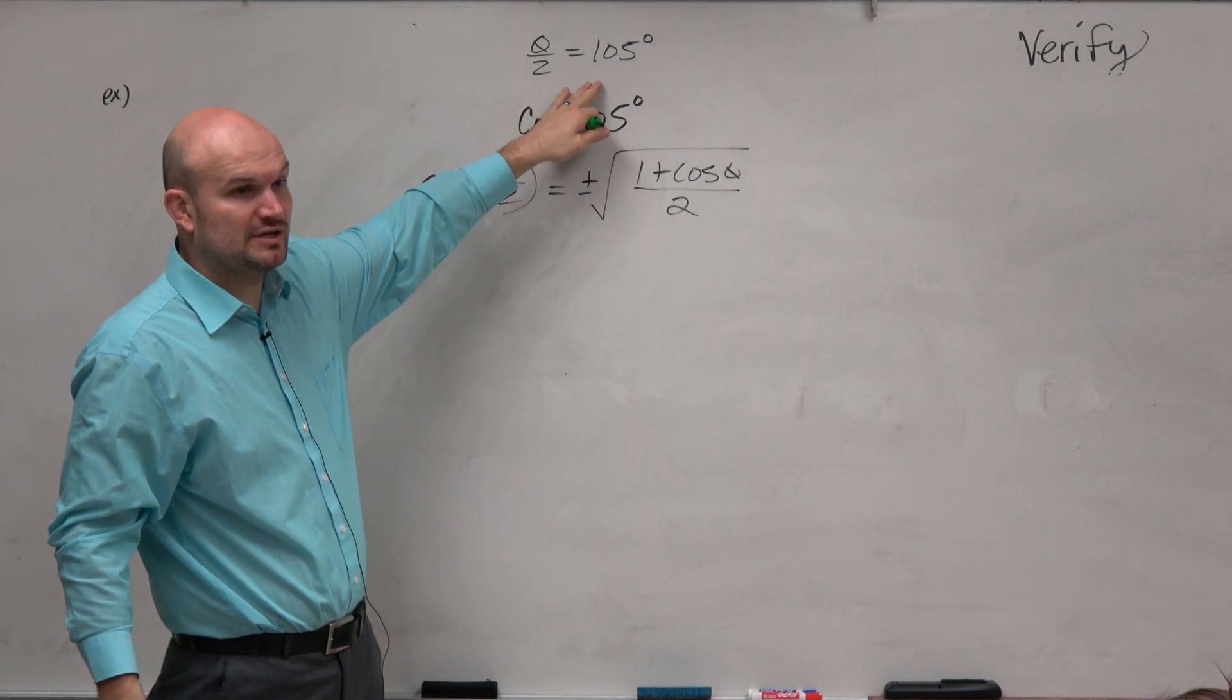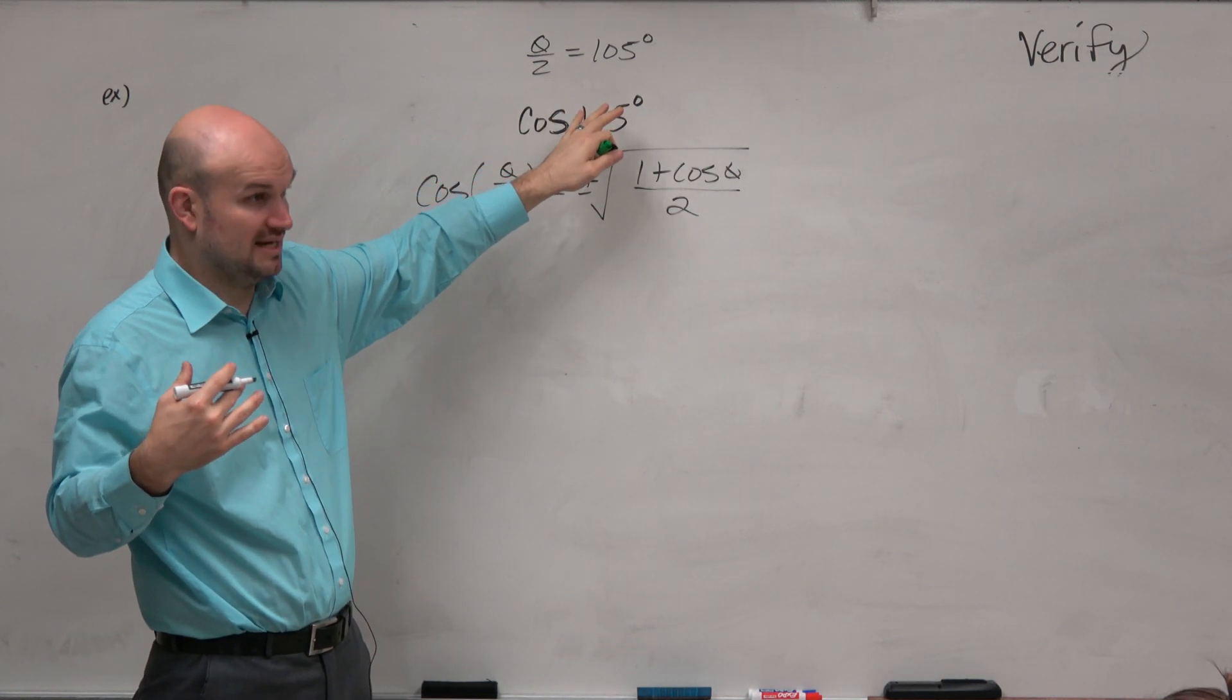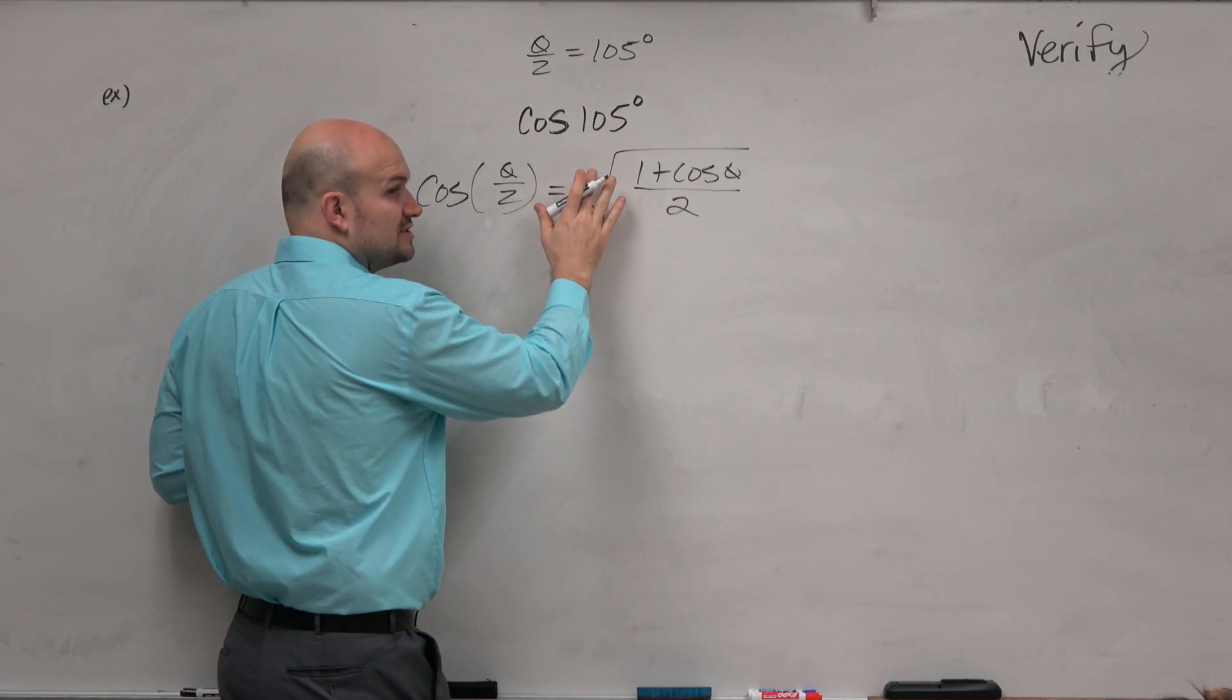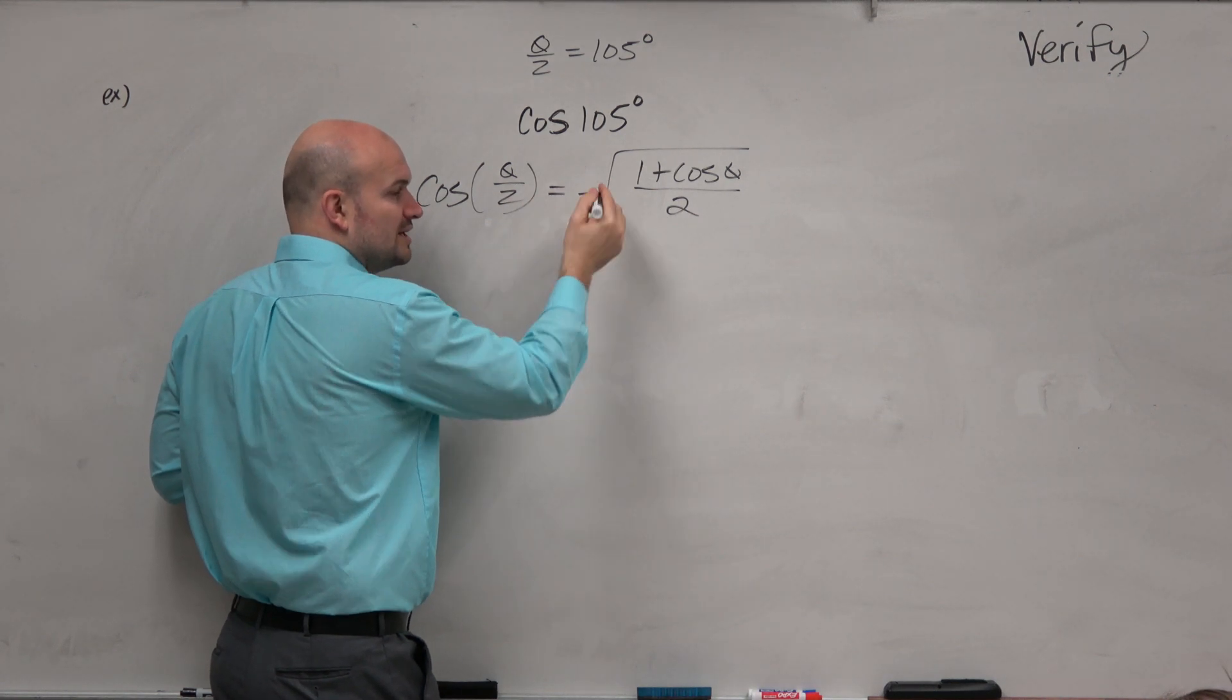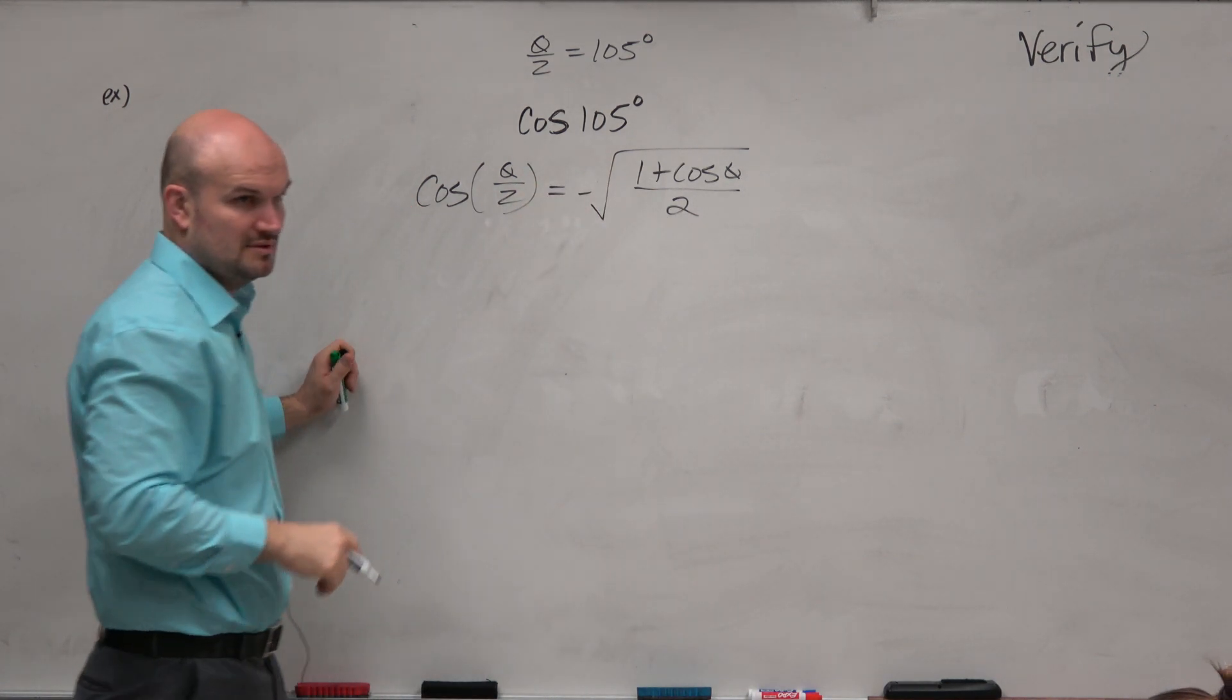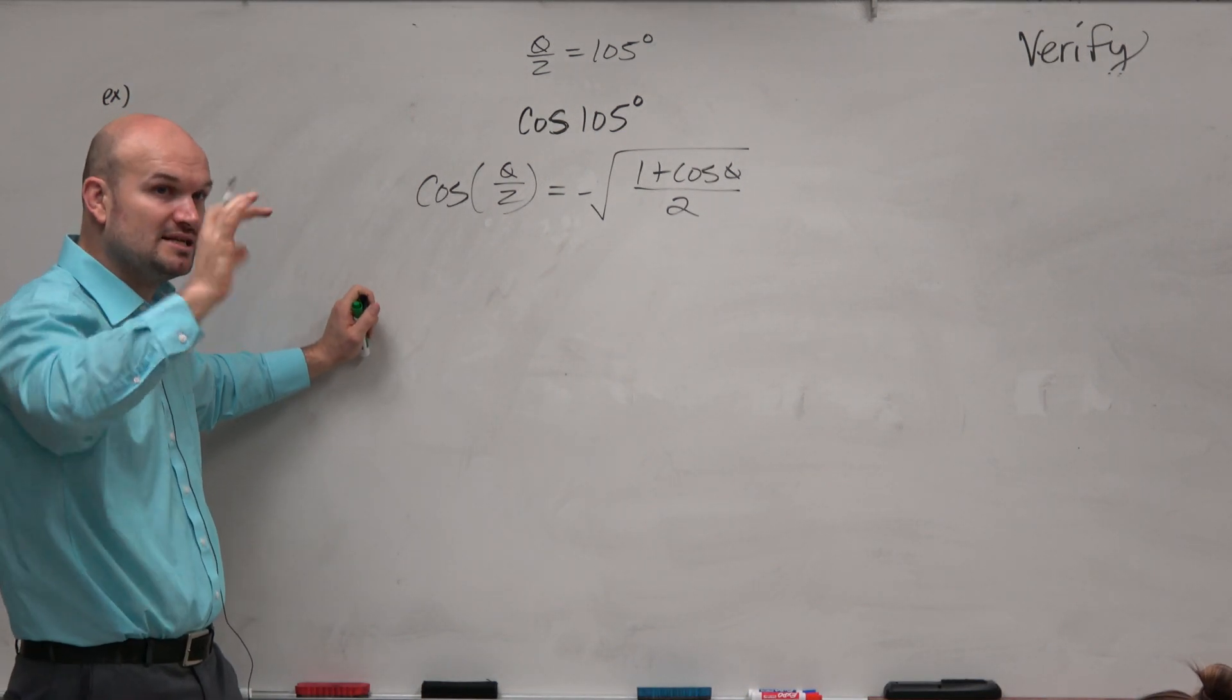All right, what quadrant is 105 degrees in? Second. So therefore, is cosine negative in the second quadrant? Yes. So we're going to use the negative square root. OK? So you don't use plus or minus, plus and minus. You're just using either the positive or the negative.